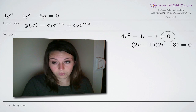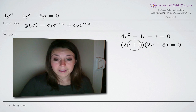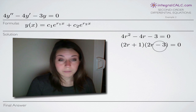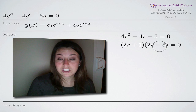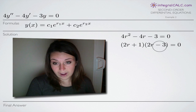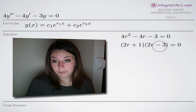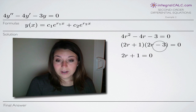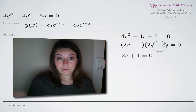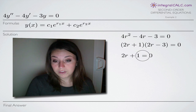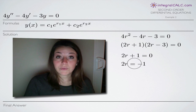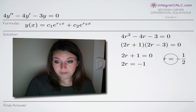Once we do that, we solve for r. In this case, we can factor. If you couldn't factor, you could complete the square or use the quadratic formula. Our factors are 2r plus 1 and 2r minus 3, set equal to zero. Setting 2r plus 1 equal to zero and solving: subtract 1 from both sides to get 2r equals negative 1, then divide by 2 to get r equals negative one half.